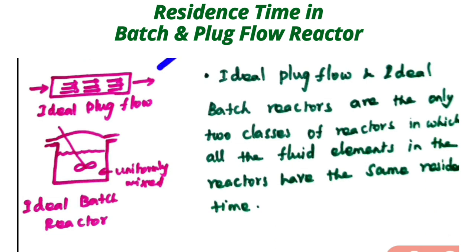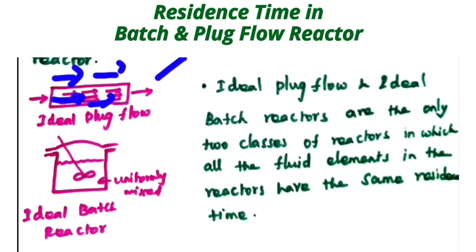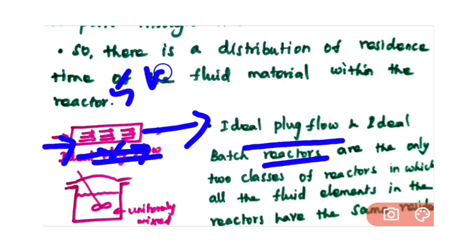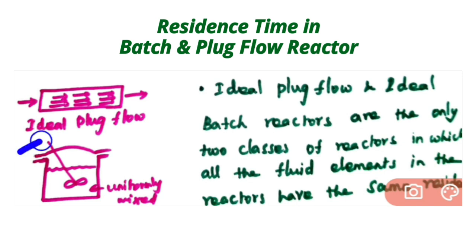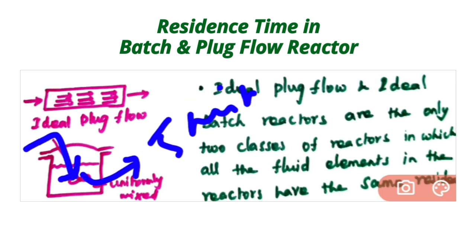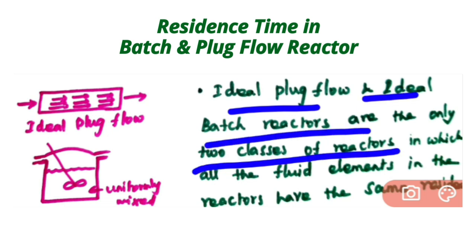If you consider ideal plug flow, the fluid has uniform velocity — we have a flat velocity profile. So all the molecules present in the fluid have the same residence time. For example, if the residence time is 5 minutes, in an ideal plug flow reactor all molecules take 5 minutes to pass through the reactor. In a batch reactor, you take all the reactants inside and allow 5 minutes for the reaction to complete, then after 5 minutes you take out all the product. So all the molecules have the same residence time. These ideal plug flow and ideal batch reactors are the only two classes of reactors in which all fluid elements have the same residence time.